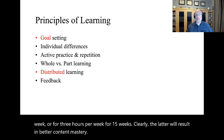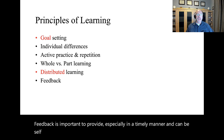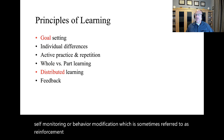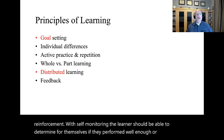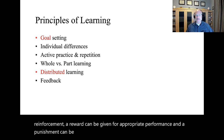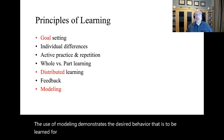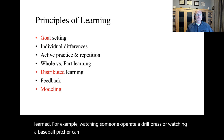Feedback is important to provide, especially in a timely manner, and can be self-monitoring or behavior modification, which is sometimes referred to as reinforcement. With self-monitoring, the learner should be able to determine for themselves if they performed well enough or not. For reinforcement, a reward can be given for appropriate performance, and a punishment can be imposed for inappropriate performance. The use of modeling demonstrates the desired behavior that is to be learned. For example, watching someone operate a drill press or watching a baseball pitcher can give examples of good performance.